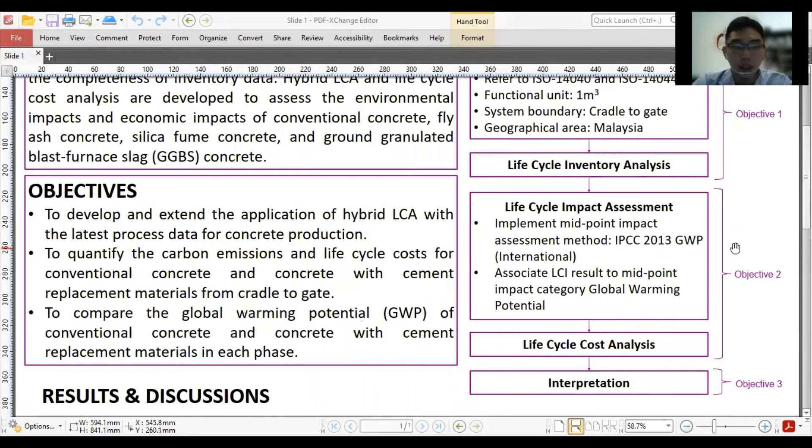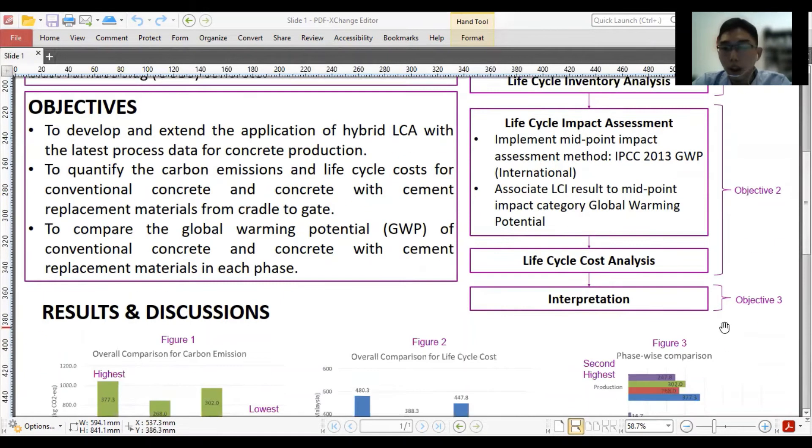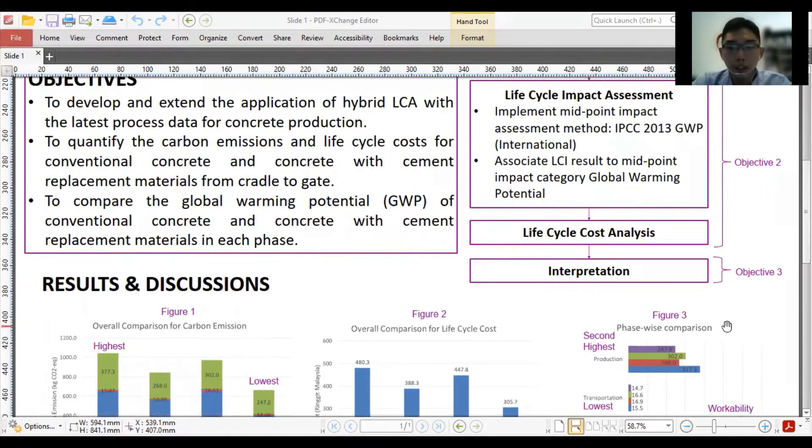Objective 2 is achieved through lifecycle impact assessment and lifecycle cost analysis. Lifecycle impact assessment implements midpoint impact assessment method IPCC 2013 GWP International and associates LCI result to midpoint impact category global warming potential. Lifecycle cost analysis uses stepwise 2006 monetization method to convert carbon emission into monetary value. Objective 3 is achieved by interpretation. Global warming potential between the concrete is compared in each phase. The cradle to gate is from extraction to production with an exceeding system boundary of input-output table.